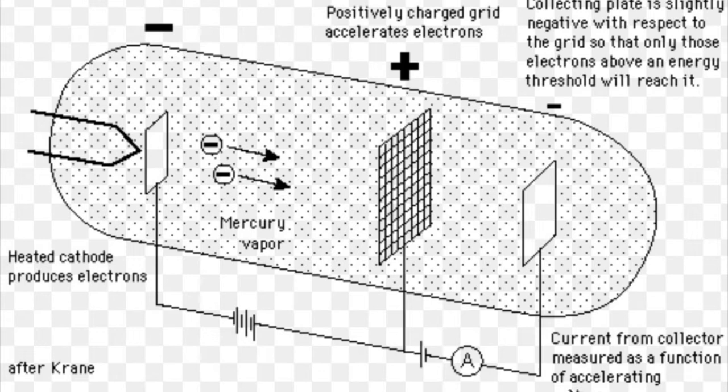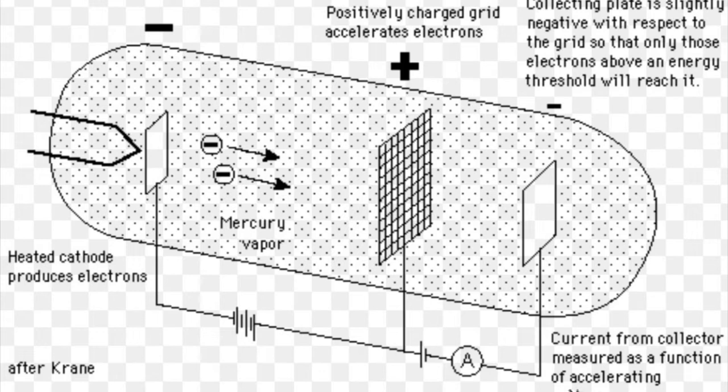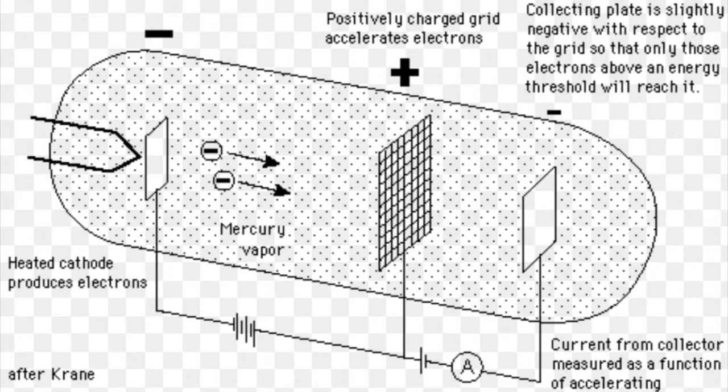Past the grid was a collection plate that was held at a small negative voltage. It was discovered that only a specific amount of an atom's kinetic energy would be lost as the electrons collide with the mercury atom.